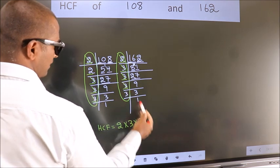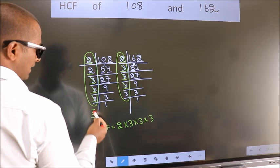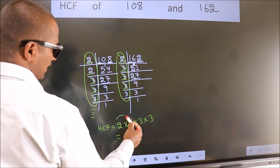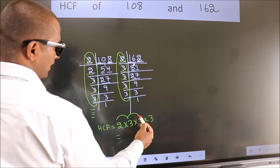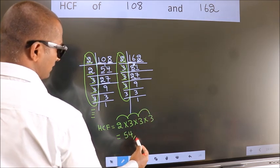No more numbers have been left out. So our HCF is 2 into 3, 6 into 3, 18 into 3, 54 is our HCF.